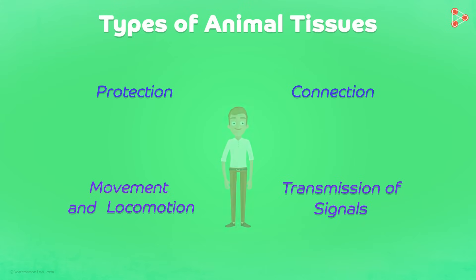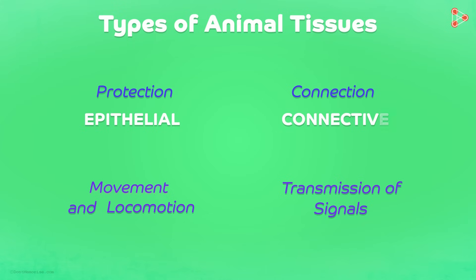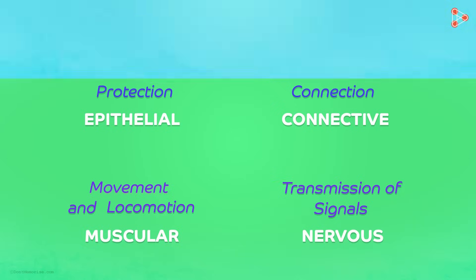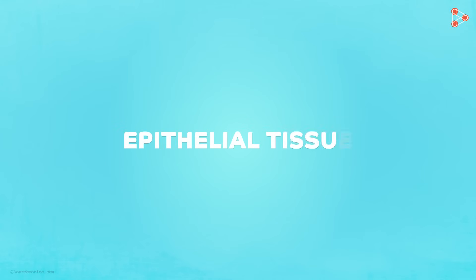Based on this, we get the four major types of tissues: epithelial, connective, muscular, and nervous. In this video, let's begin with the first type — the epithelial tissue.